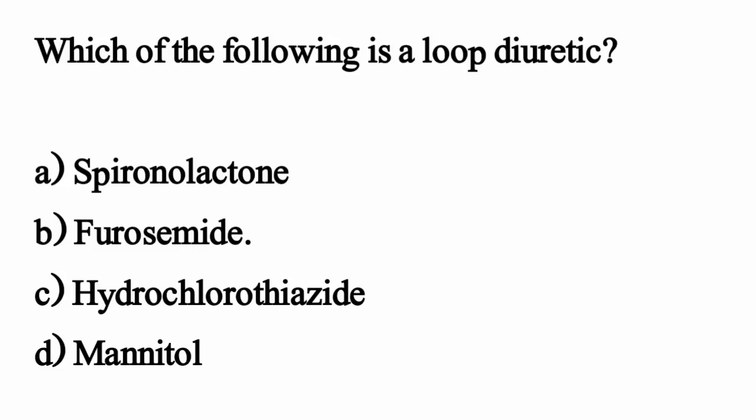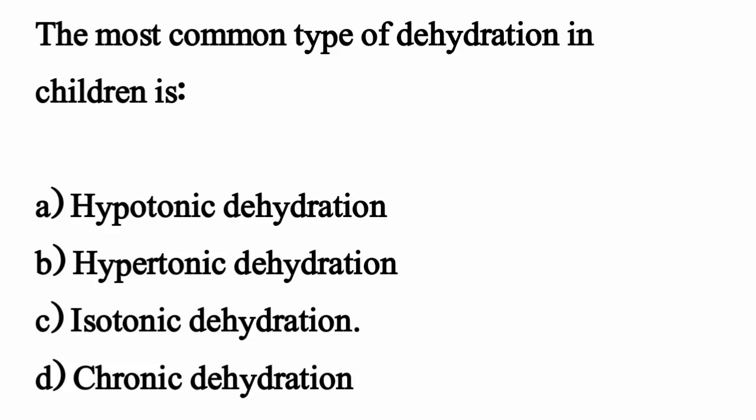The correct option is option B: Furosemide. The most common type of dehydration in children is? The correct option is option C: Isotonic dehydration.